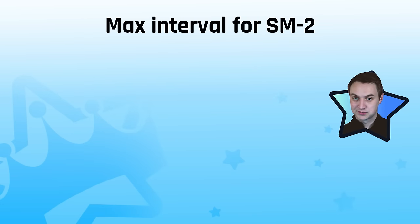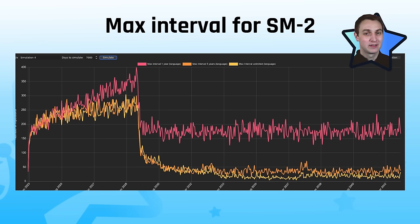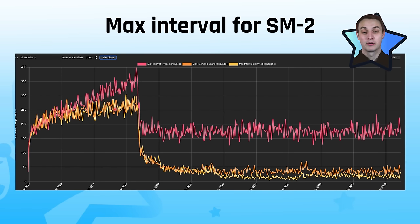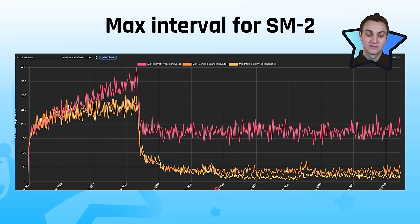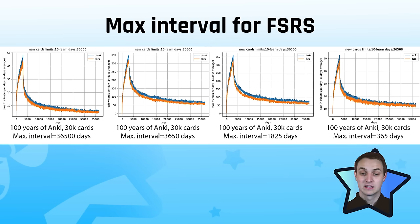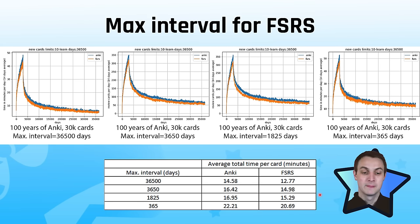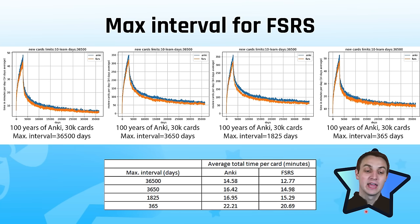The maximum interval is also an interesting question. I previously recommended six months or a year, and we did some data analysis comparing one year, five years, and unlimited. With SuperMemo 2, a one-year max noticeably increases workload after a couple years of reviewing, but five and ten years were not significantly different. For FSRS, a one-year max interval does increase average total time spent on a card and actual retention will be higher than your desired retention — but five and ten years don't differ much. Anywhere from one to five years is probably a good max interval.